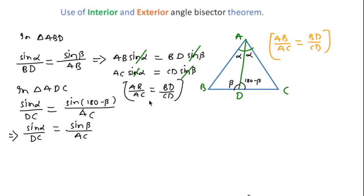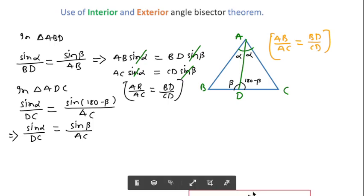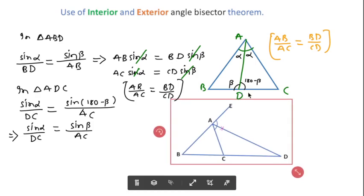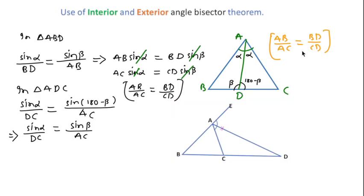The proof of this relation is shown here. In the case of the exterior angle bisector theorem we can use the same formula and prove it on the same basis. You can see angle A is bisected externally, so the ratio of AB to AC is also equal to the ratio of BD to CD.